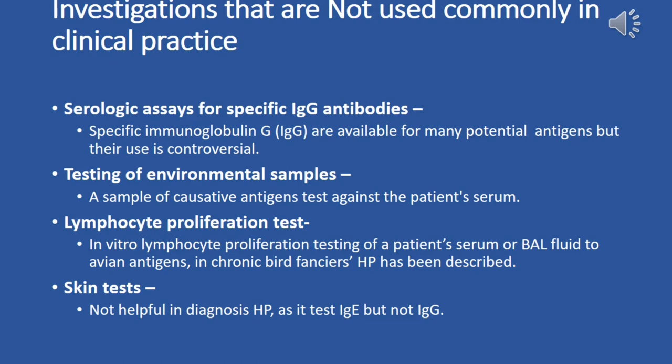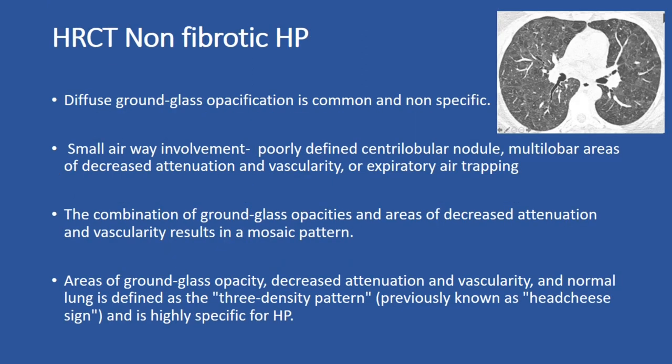In HRCT findings of non-fibrotic hypersensitivity pneumonitis, several characteristic patterns are observed. Diffuse ground glass opacification is a common, non-specific finding. Small airway involvement may present as poorly defined centrilobular nodules, multi-lobar areas of decreased attenuation and vascularity, or expiratory air trapping. The combination of ground glass opacities and areas of decreased attenuation creates a mosaic pattern on HRCT.